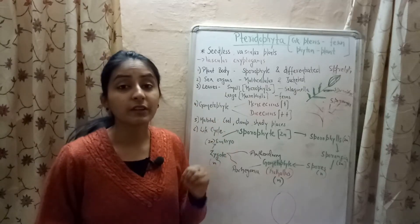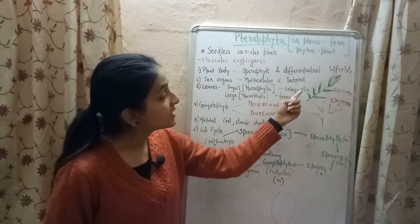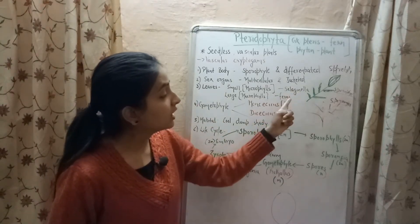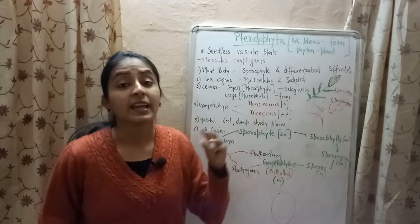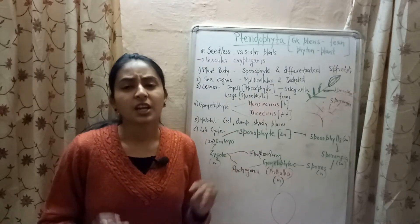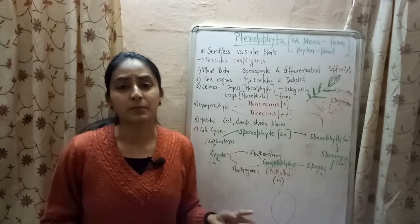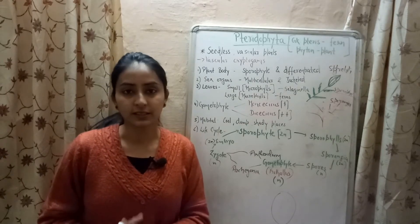The examples of division Pteridophyta include Selaginella, ferns, Equisetum, and Marsilia. These are the most common and easiest examples to learn.